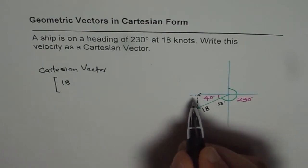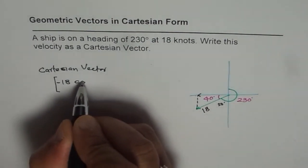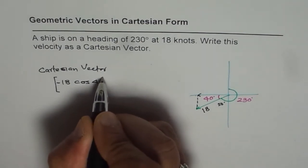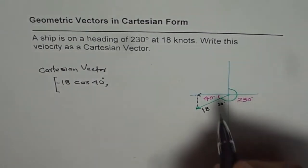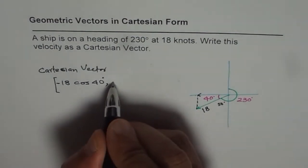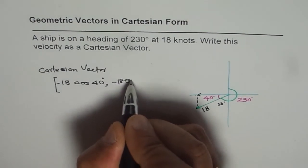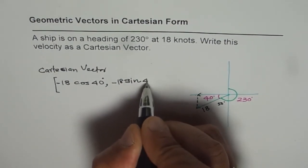Now since it is in the negative direction, we will write minus 18 cos of 40 degrees. We are taking acute angles. And for the y component, it is minus 18 sine of 40 degrees.